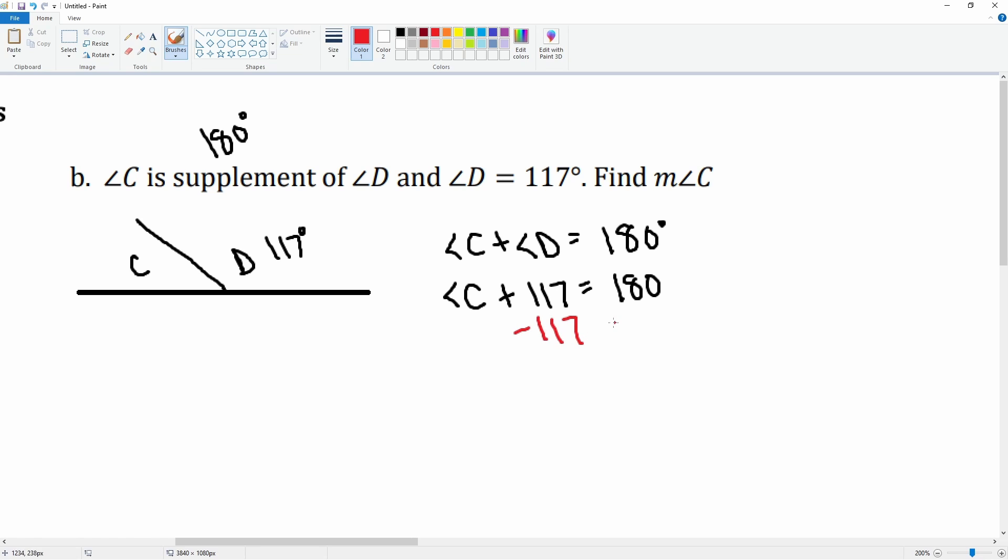If we subtract 117 from both sides, this cancels, leaving you with angle C is equal to 180. 180 minus 117 gets us 60 degrees. There you go.